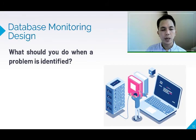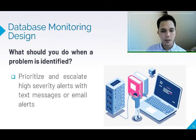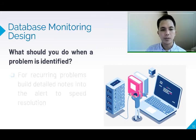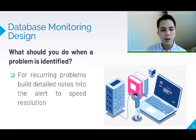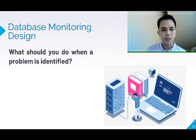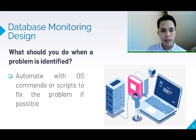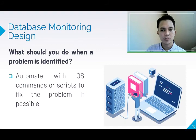What should you do when a problem is identified? 1. Prioritize and escalate high-severity alerts with text messages or email alerts. 2. For recurring problems, build detailed notes into the alert to speed resolution. And lastly, automate with OS commands or scripts to fix the problem if possible.